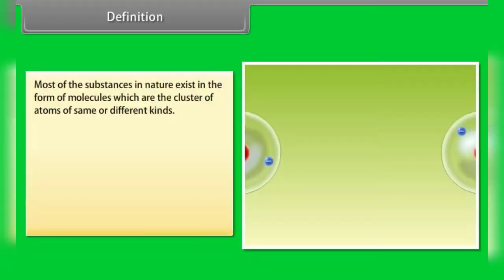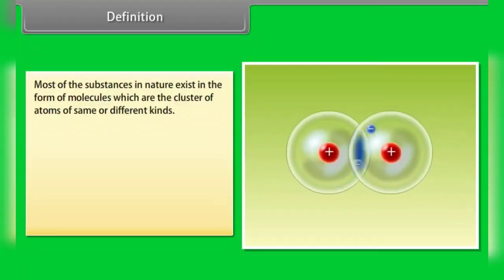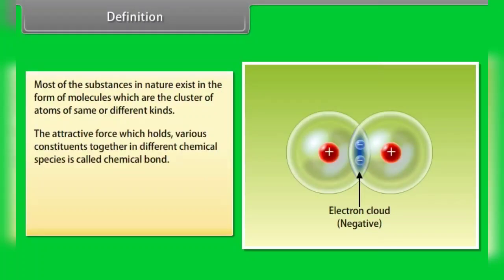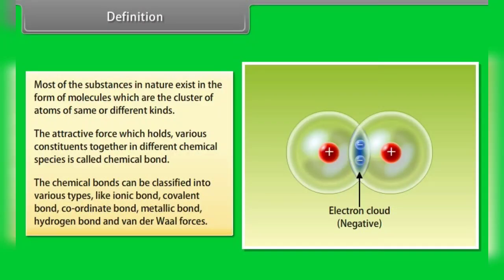Most of the substances in nature exist in the form of molecules, which are clusters of atoms of the same or different kinds. The attractive force which holds various constituents together in different chemical species is called a chemical bond. Chemical bonds can be classified into various types like ionic bond, covalent bond, coordinate bond, metallic bond, hydrogen bond, and Van der Waal forces.